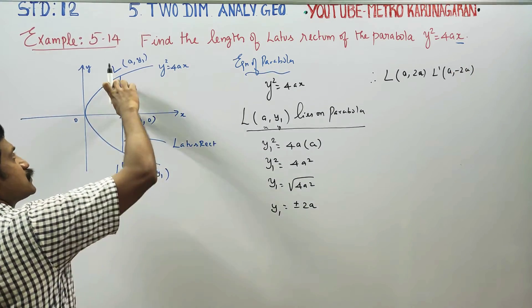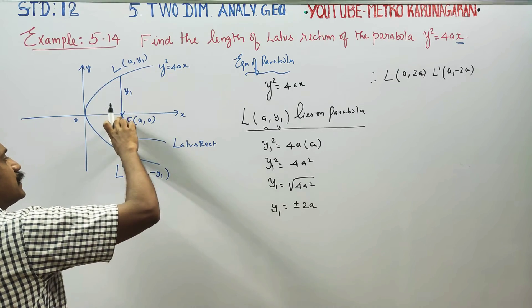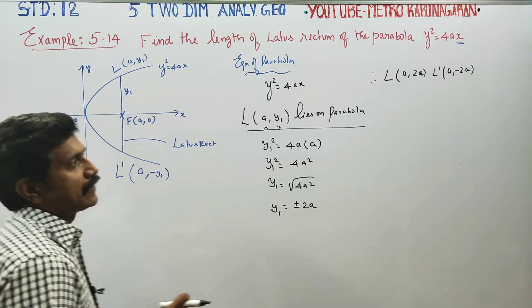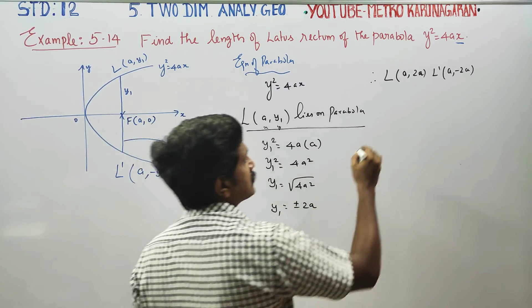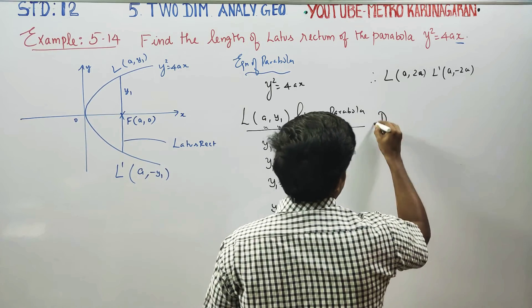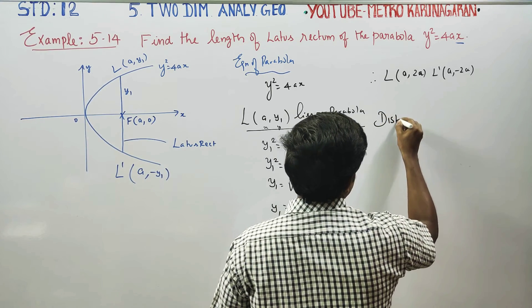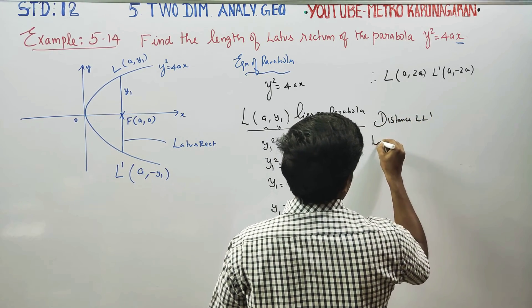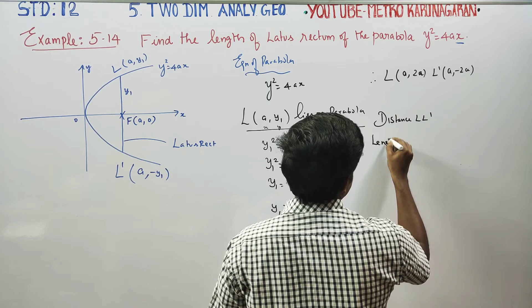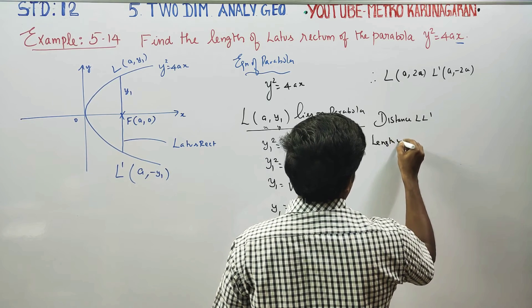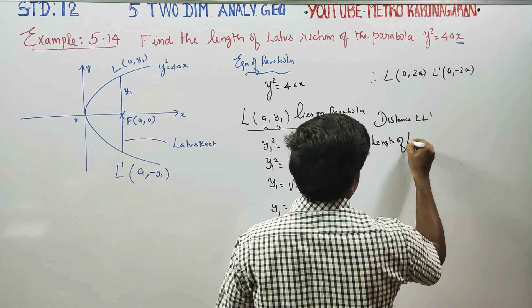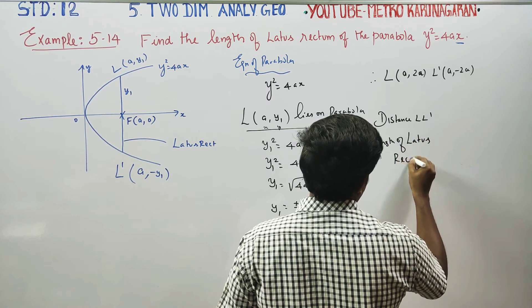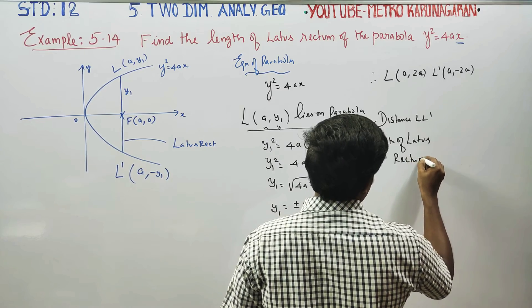Then we find the distance. The length of the latus rectum is the distance between these two points L and L'.